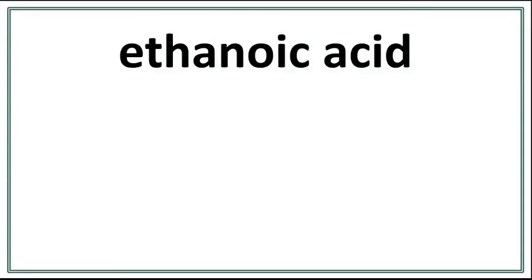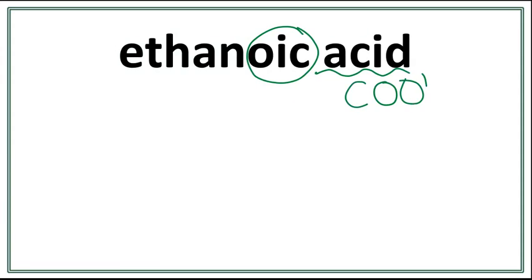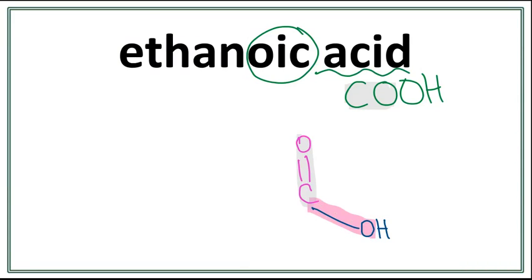Let's draw the structure for ethanoic acid. This 'oic acid' tells us that this is a carboxylic acid, meaning that we have a COOH present. When we draw this COOH, we end up with carbon double bonding with oxygen — this first carbon and oxygen here — and then carbon having a single bond with this oxygen right here, and then a single bond between oxygen and hydrogen, this OH right here.